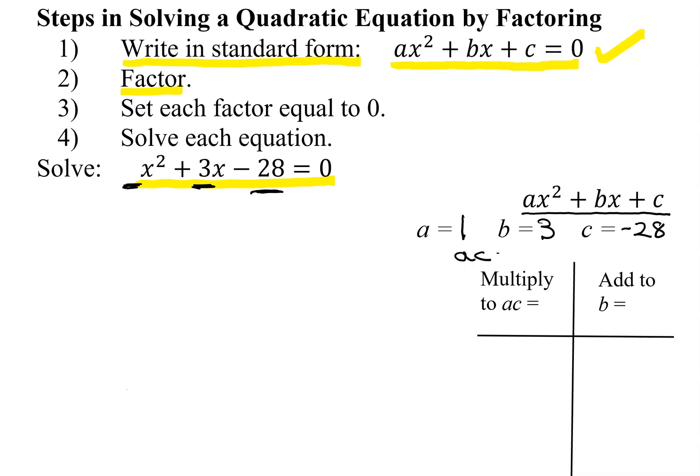So when we multiply a times c, we get 1 times negative 28, which gives you negative 28. So I have two numbers that multiply to negative 28 and add to b, which is 3. Since they multiply to a negative, the signs are opposite. Since they add to a positive, the bigger one has to be the positive.